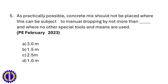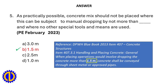As practically as possible, concrete mix should not be placed where it can be subject to manual dropping by more than blank, and where no other special tools and means are used. a. 3.0 m, b. 1.5 m, c. 2.5 m, d. 1.0 m. Answer: b. 1.5 m. Reference: DPWH Blue Book 2013 Item 407 Concrete Structures — when placing operations would involve dropping the concrete more than 1.5 m, concrete shall be conveyed through sheet metal or approved pipes.